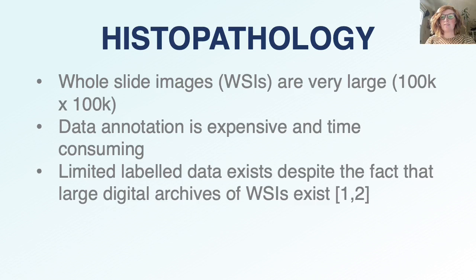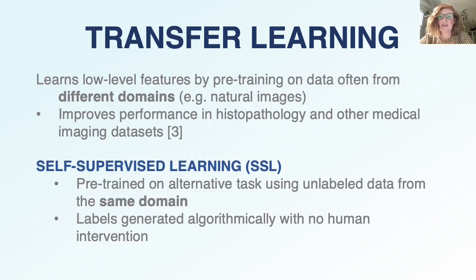Digital histopathology images are well suited to deep learning, but there are a few challenges. These whole slide images are very large, making data annotation by pathologists expensive and time-consuming. Because of this, limited labeled data are available despite the fact that large digital archives of whole slide images exist. This lack of labeled data makes transfer learning a popular choice. Transfer learning learns low-level features by pre-training on data, often from different domains such as natural images.